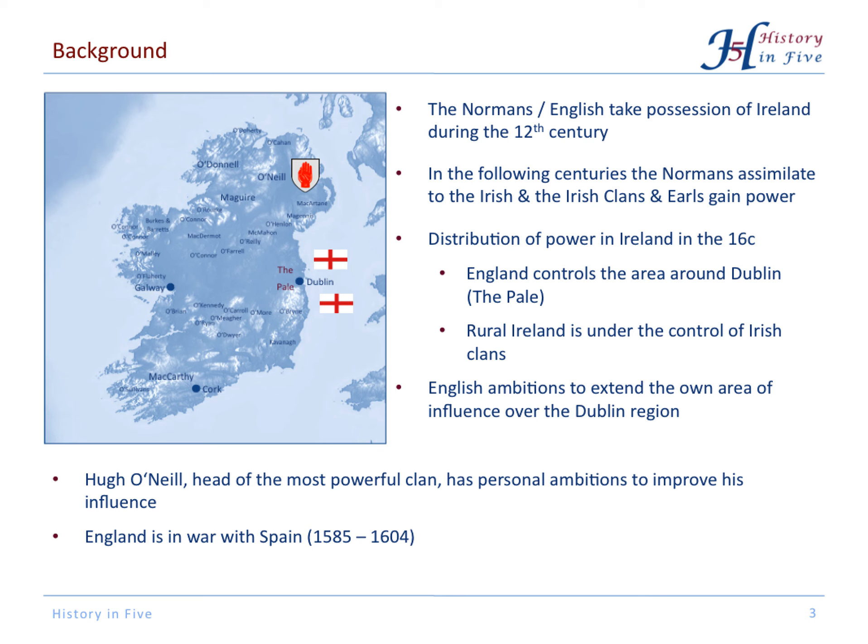In the 16th century, England controlled the area around Dublin and cities, and the rural island was under control of Irish clans. Of course, the English had the ambition to extend their area of influence.